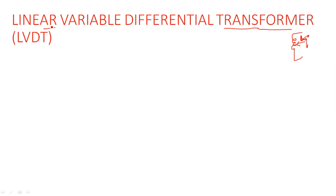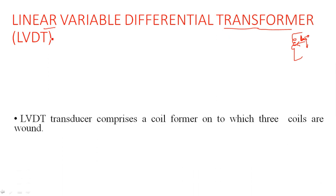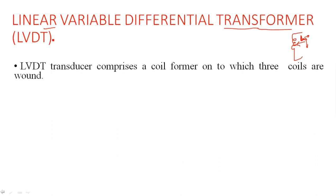Why is it called a transformer instead of transducer? We can also call it a transducer, but it is called a transformer because we are using two windings — primary winding and secondary winding. With primary and secondary windings, it comes under a transformer, which transforms energy from one winding to another.